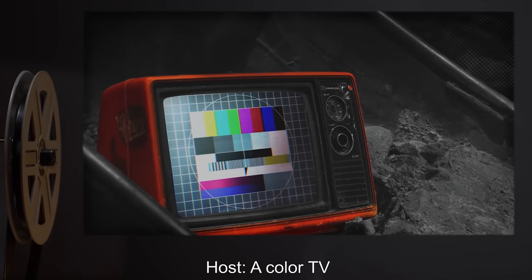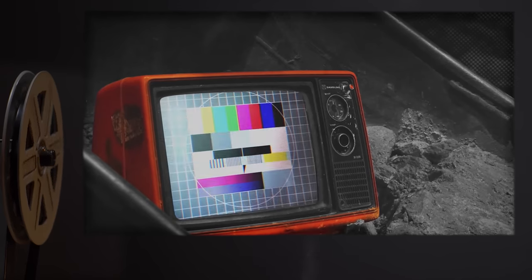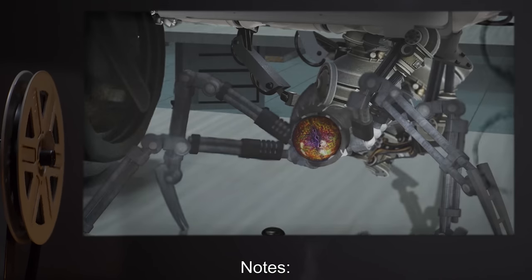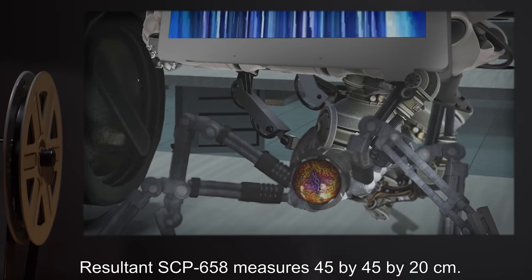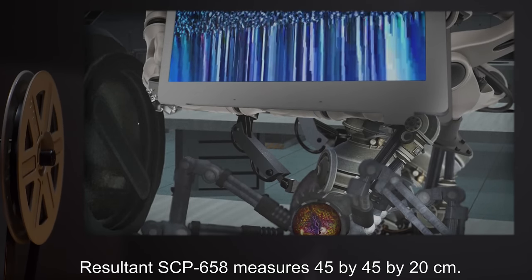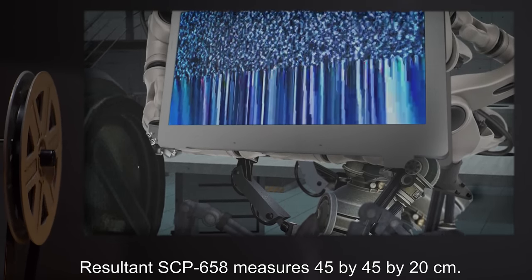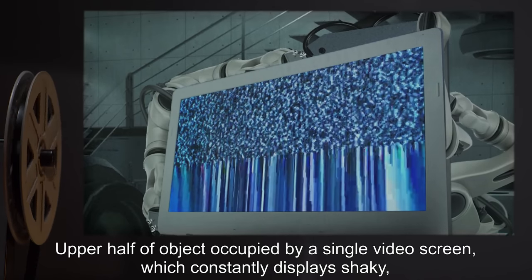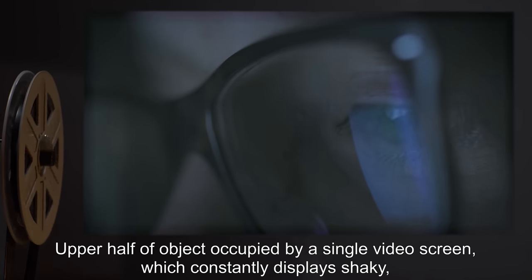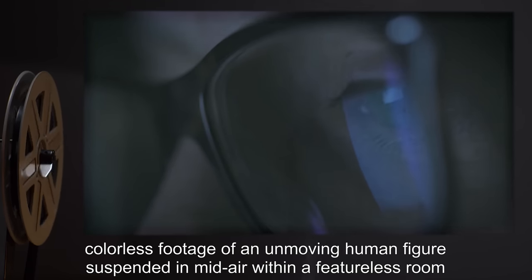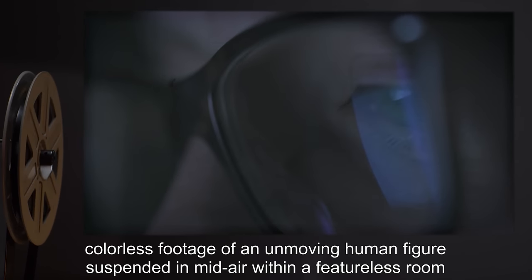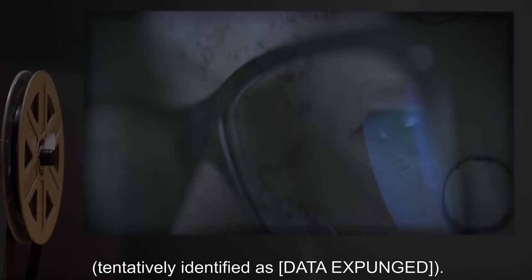Host: A color TV. Gestation Period: 14 Days. Notes: Resultant SCP-658 measures 45 by 45 by 20 centimeters. Upper half of object occupied by a single video screen, which constantly displays shaky colorless footage of an unmoving human figure, suspended in mid-air, within a featureless room, tentatively identified as data expunged.